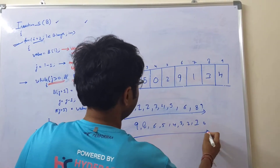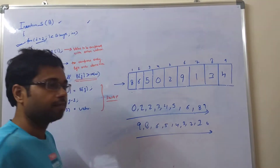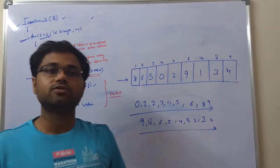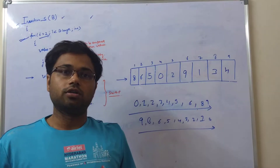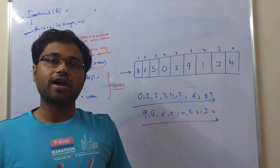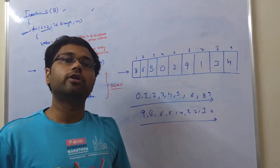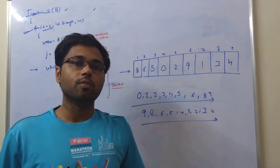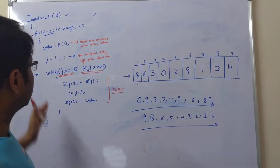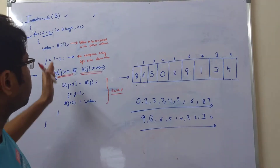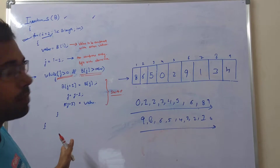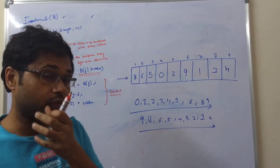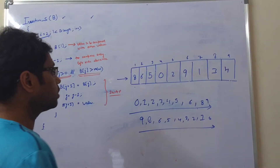Or you can sort these numbers in decreasing order like 9, 8, 6, 5, 4, 3, 2, 1, 0. The basic purpose of sorting is to sort the numbers either in increasing or decreasing order according to your suitability. So we will take an example and see how this works.